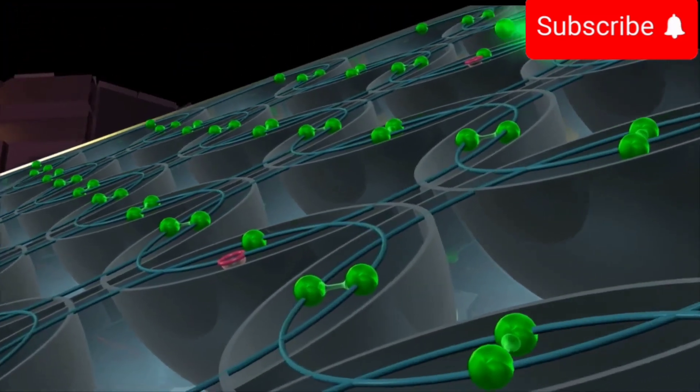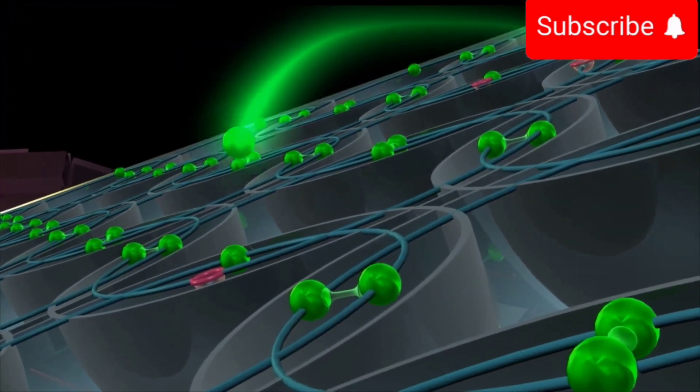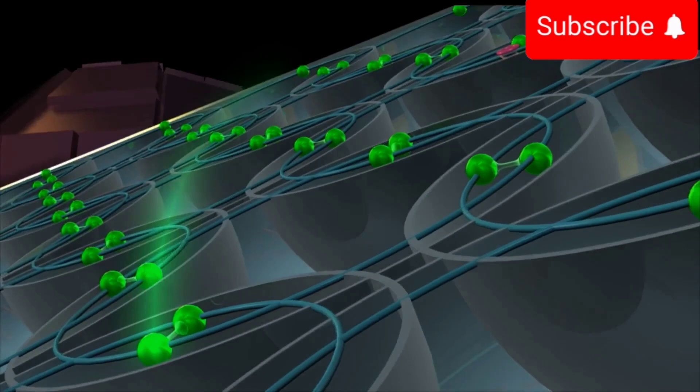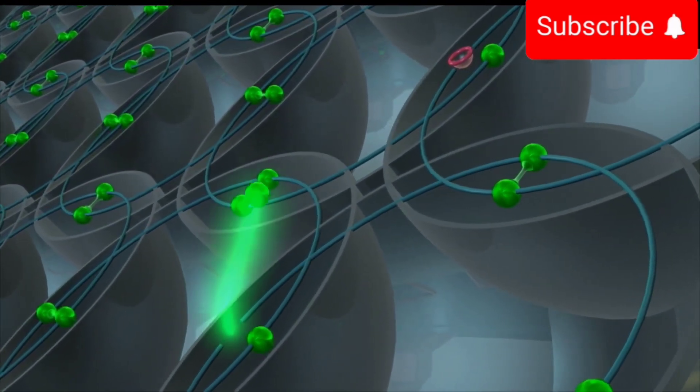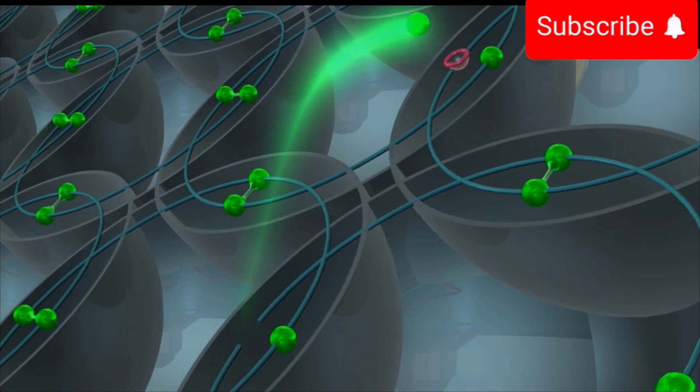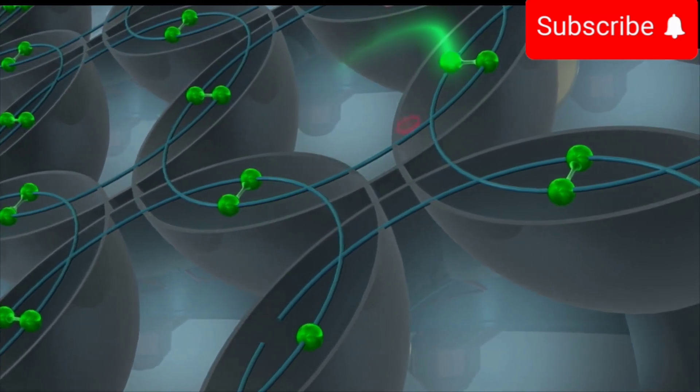A hole is filled by an electron of the neighboring atom, leaving behind another hole at its site. We can say that while the electron moves in one direction, the hole appears to move in the opposite direction.